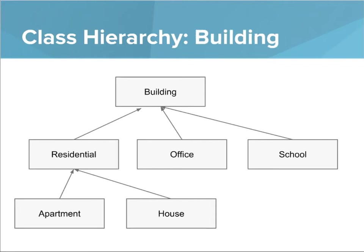Here's another one that shows a potential class hierarchy for a building. A building would be at the top, and then there are different types of buildings. You have a residential building, you have an office building, you have a school building. A residential building is still a building, but it's a more specific type of building and it might have different attributes. Then under residential, we have an apartment building or a house. These are all specific types.